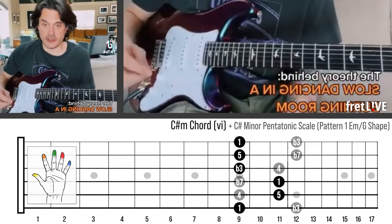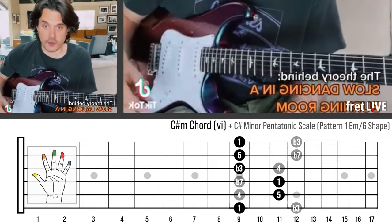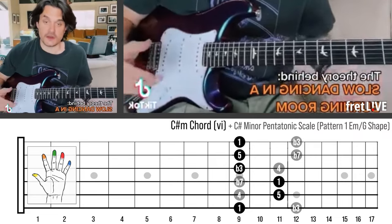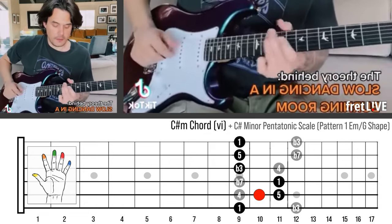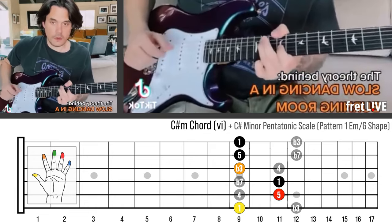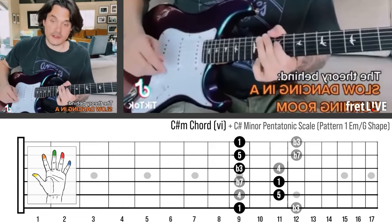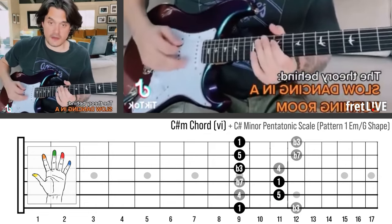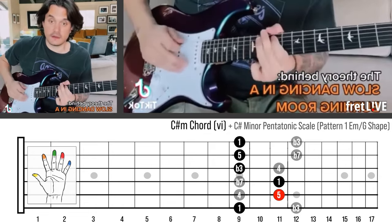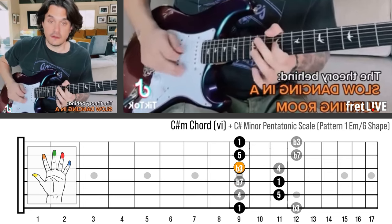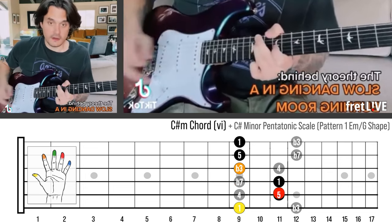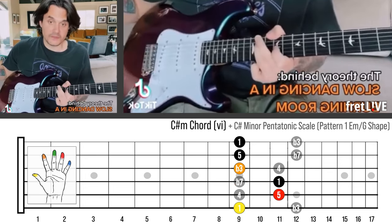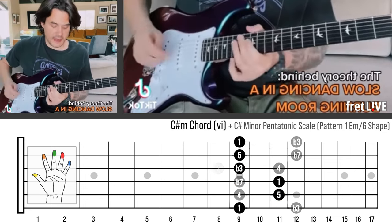Here's the theory behind Slow Dancing in a Burning Room, so you can learn more than just how to play the song. That's C-sharp minor pentatonic - hear the notes in there. It's right there in the pentatonic.